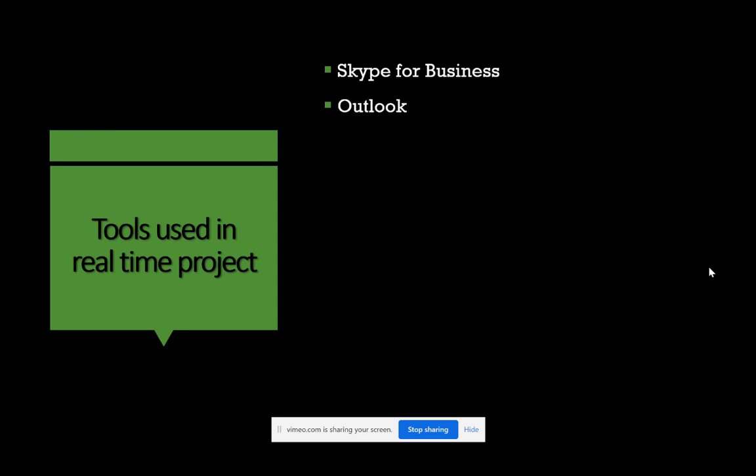Outlook is used for all email communications — whether with business stakeholders, colleagues, or management. You'll use Outlook to write and communicate your intentions on a given topic in a professional manner. You also need to understand how to effectively use Outlook and how to draft professional emails depending on whether you're writing to a colleague or to higher management.